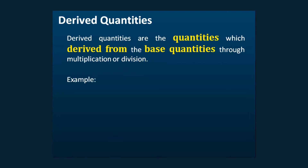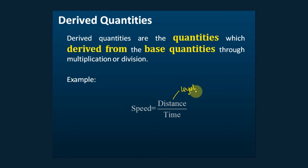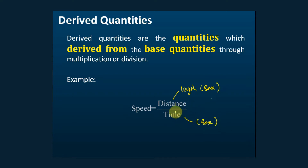Let's see this example. Speed is equal to distance over time. Is distance a base quantity or derived quantity? It's a base quantity, because distance is a measure of length, and length is a base quantity. Is time a base quantity or derived quantity? It's a base quantity as well. Now, both distance and time are base quantities, and speed is equal to distance over time. So we say speed is derived from distance and time, and we call this a derived quantity.